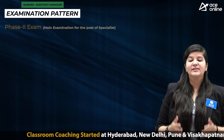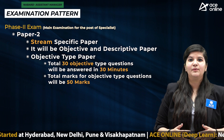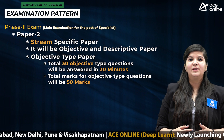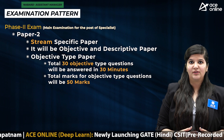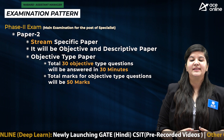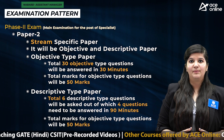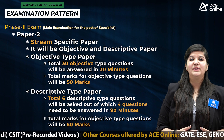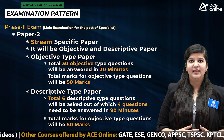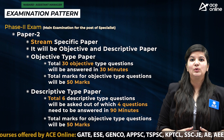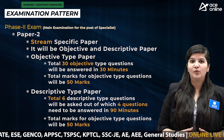Paper 2 is a stream-specific paper with both objective and descriptive questions. There will be 30 objective questions with a time duration of 30 minutes for 50 marks. The descriptive paper has a total time duration of 90 minutes, for 50 marks, with 6 questions in which the candidate needs to attempt 4.